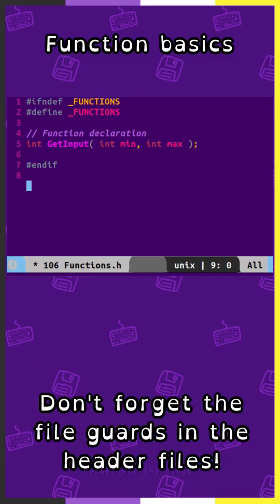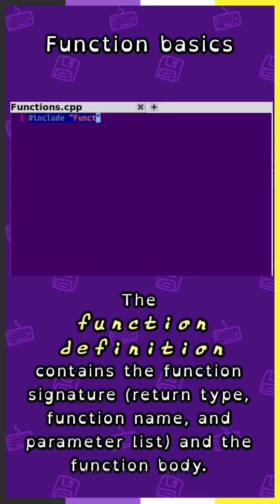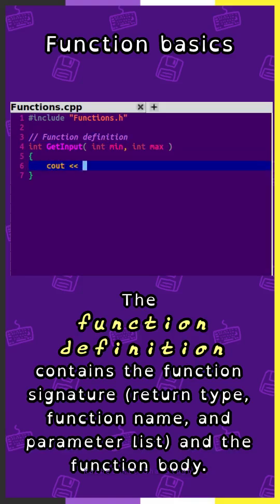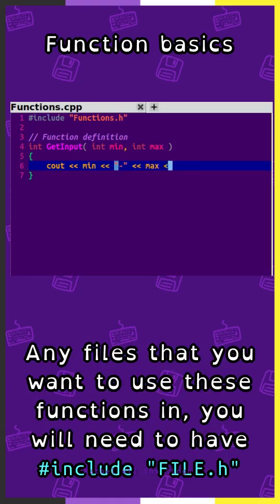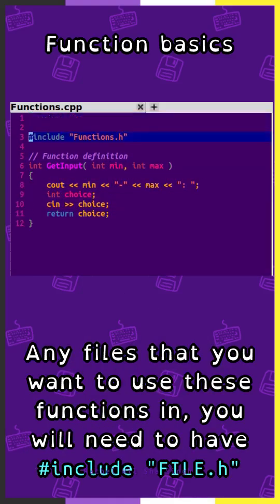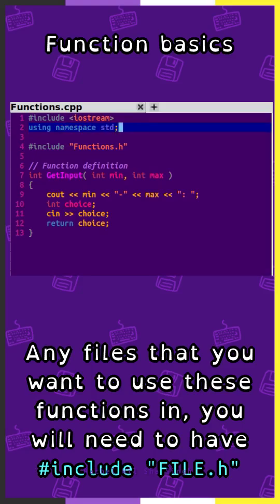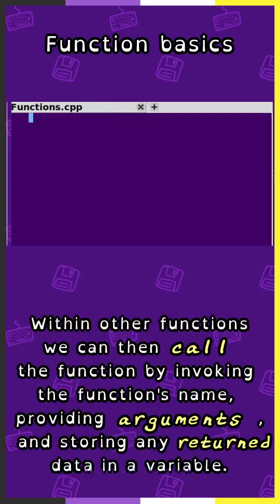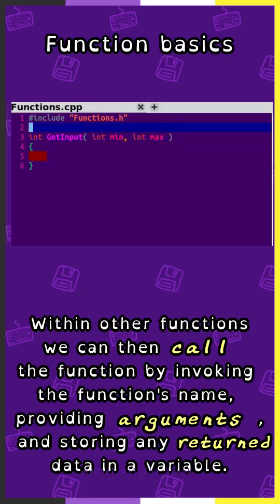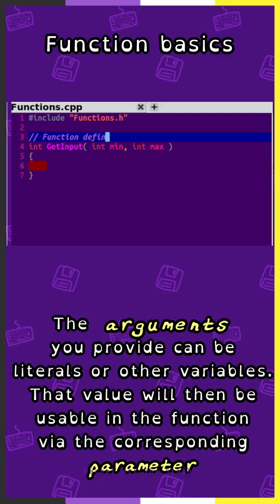Don't forget the file guards in the header files. The function definition contains the function signature and the function body. Any files that you want to use these functions in, you will need to have an include statement for that file in double quotes. Within other functions we can call the function by invoking the function's name, providing arguments, and storing any returned data in a variable.